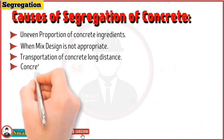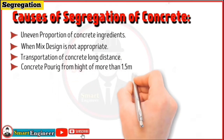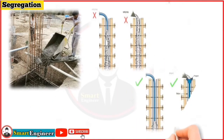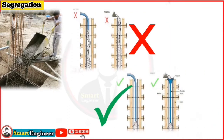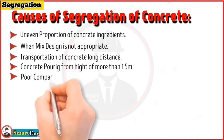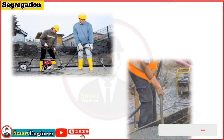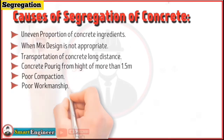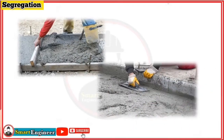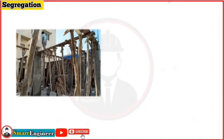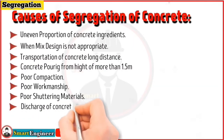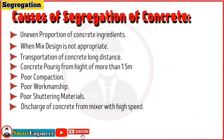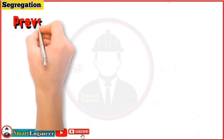Number three, concrete is transported from a long distance. Number four, pouring concrete from a height of more than 1.5 meters. Number five, vibrating the concrete for a prolonged duration at the same place — also called over-compaction. Number six, poor workmanship — for example, proper engineering practices not followed while concreting. Number seven, use of poor shuttering materials — for example, shuttering which leaks. Number eight, concrete is discharged from a mixer at high speed or the inside blades of the mixer are damaged.